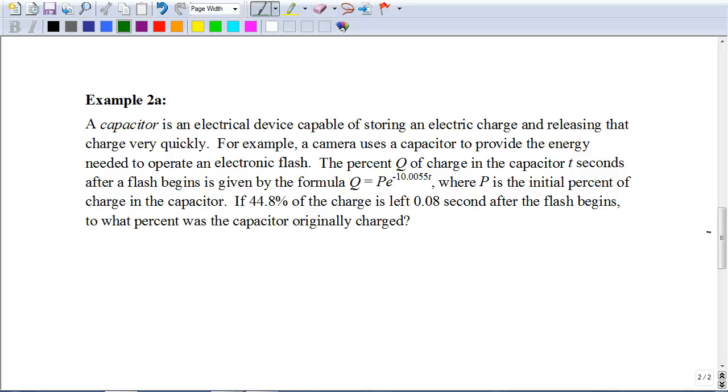So Q, in this case, is going to be the 0.448, because Q represents the percent of charge in the capacitor after a certain amount of time after the flash begins. So if there's 44.8% left after 0.08 seconds, that tells me that the 44.8%, or 0.448, is my value for Q. So it's going to be equal to, so in this case here, we're trying to find the initial amount. What was it when it was originally charged?